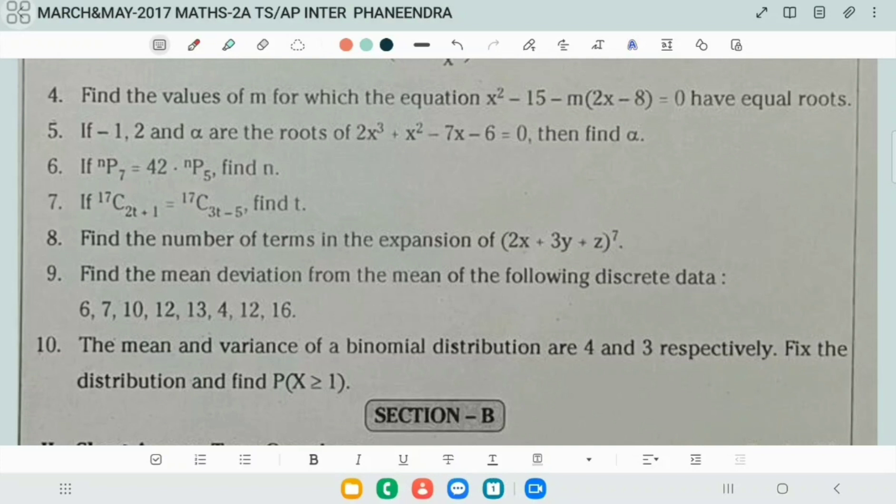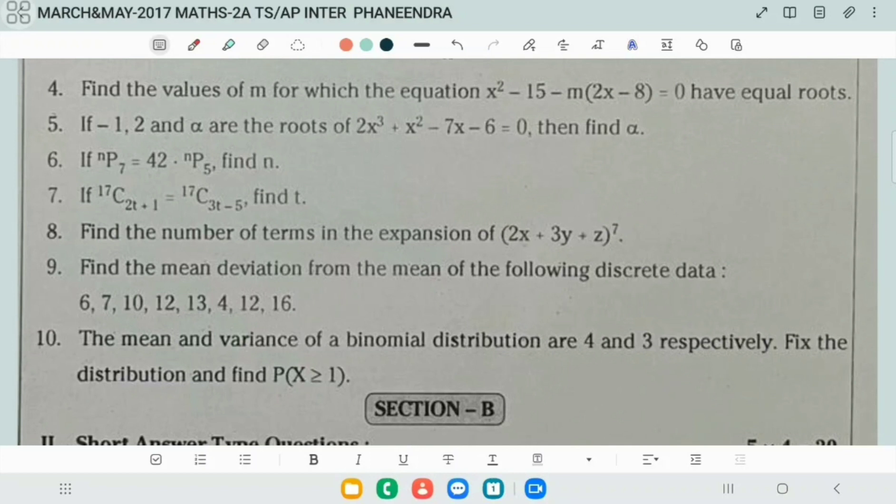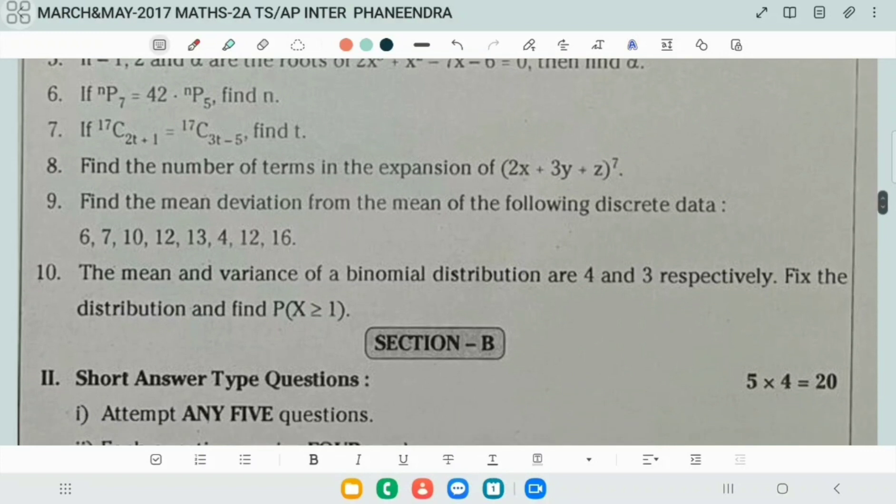So theory of equations. Next, permutation and combination questions based on nCr equals nCs that implies r equals s, or r plus n equals r plus s, or nCr equals nCs that implies r equals s, based on that property. Question number seven.